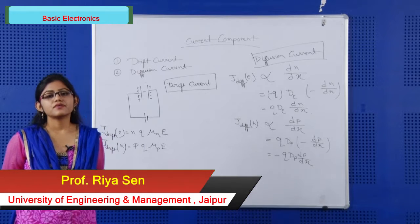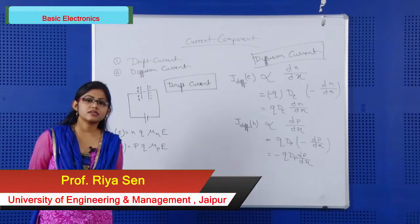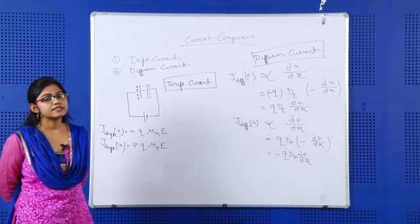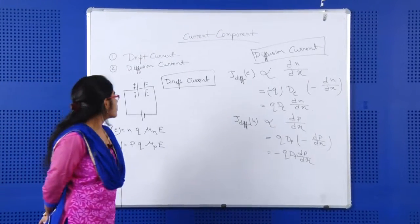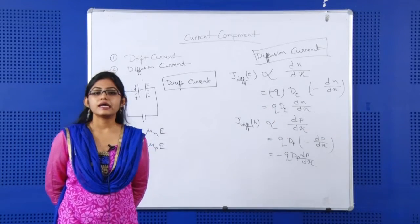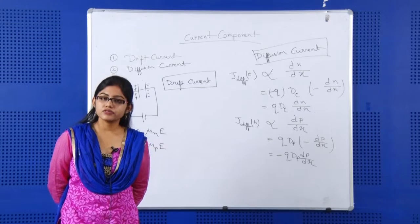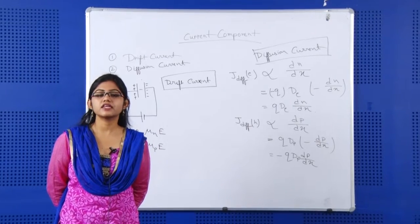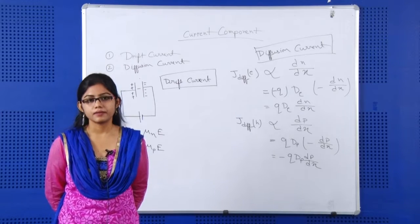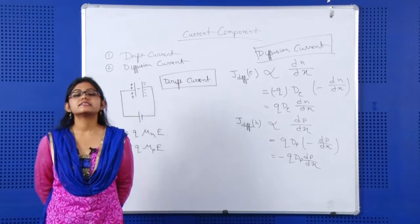Hello everyone. Today we will study the current components of a semiconductor device. Basically, there are two current components in a semiconductor device: number one is drift current and number two is diffusion current. By using these two components, that is drift and diffusion, all the charge carriers participate in conduction. First, we will explain drift current.